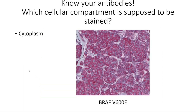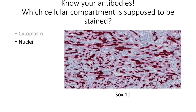What's really important first of all is that you have to know your antibodies, which means you have to be knowledgeable of which cellular compartment is supposed to be stained. Sometimes it's going to be the cytoplasm, like here on this BRAF V600E-specific antibody. Otherwise, it can be the nuclei, with also a small cytoplasmic stain, for SOX10.